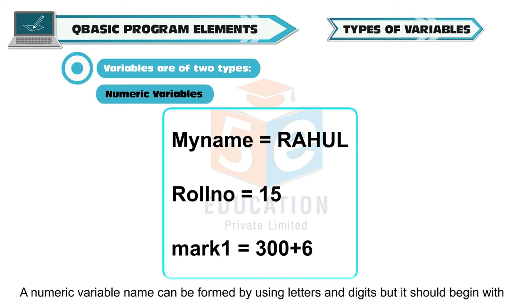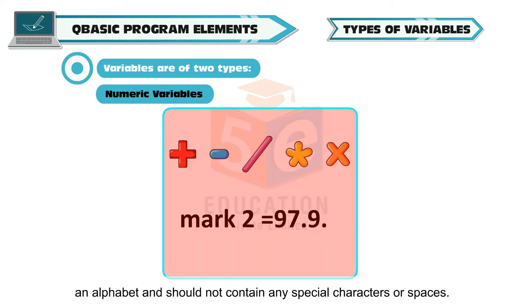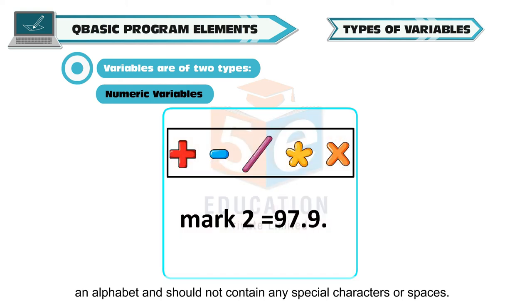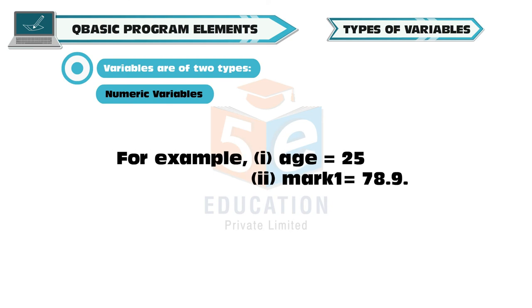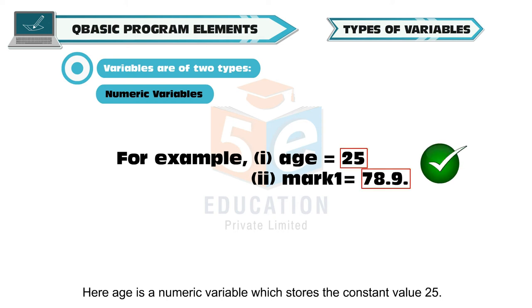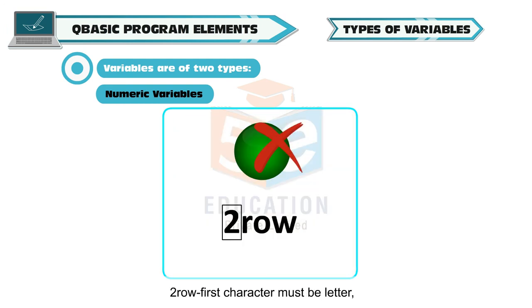Numeric variables: Numeric variables store numeric data. A numeric variable name can be formed by using letters and digits. But it should begin with an alphabet and should not contain any special characters or spaces. For example, Age is equal to 25. Mark 1 is equal to 78.9. Here, age is a numeric variable which stores the constant value 25.